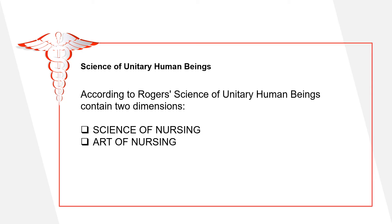According to Rogers, the Science of Unitary Human Beings contains two dimensions: the science of nursing, which is the knowledge specific to the field of nursing that comes from scientific research, and the art of nursing, which involves using the science of nursing creatively to help better the life of the patient.